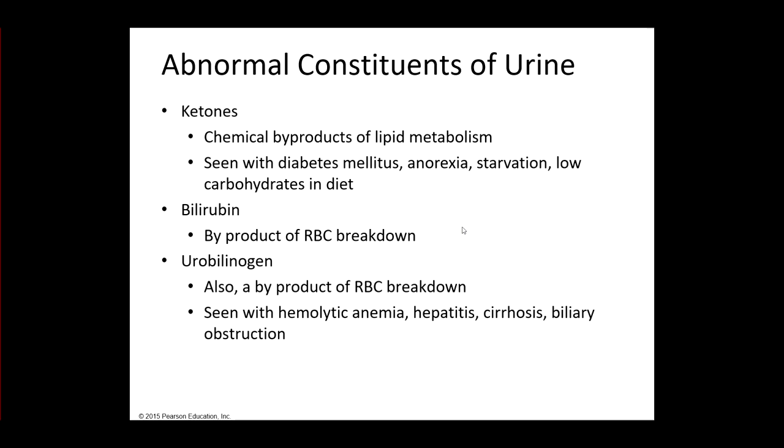Some other abnormal constituents. Ketones. These are chemical byproducts of lipid metabolism. When people lose a lot of weight rapidly, they produce these ketones in their blood and we spill that out into the urine. So we see this with diabetes, especially type 1 diabetics. People that are anorexic. They're not eating, so they're going to break down a lot of fat. Starvation. You're breaking down fat. Low carbohydrate diets. You may have heard of keto diets. This is where you're trying to burn more fat and as a result you produce ketones because you're not burning carbs, you're burning fat.